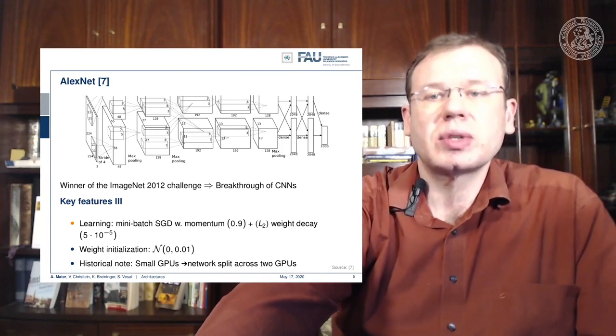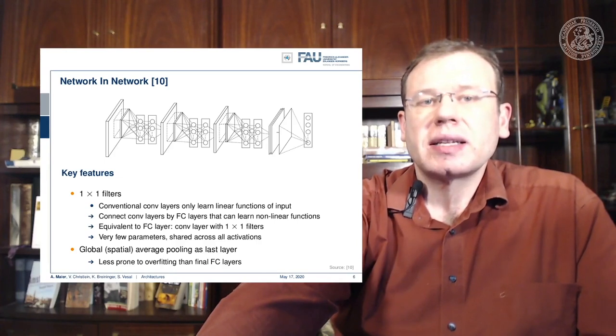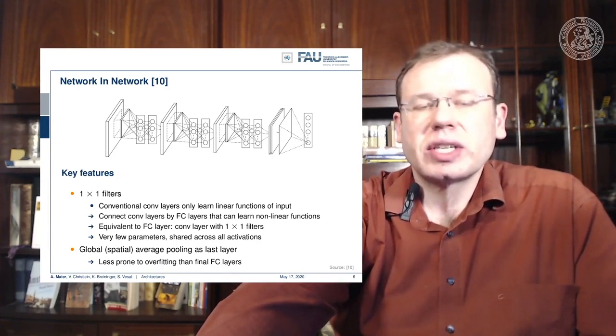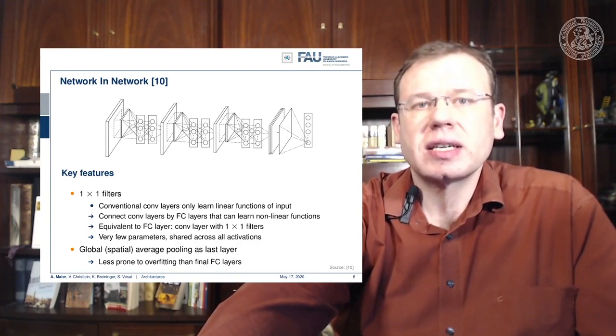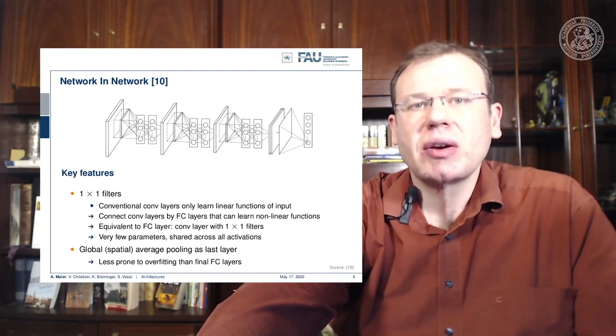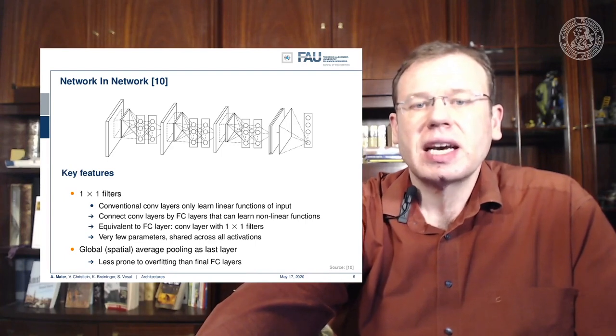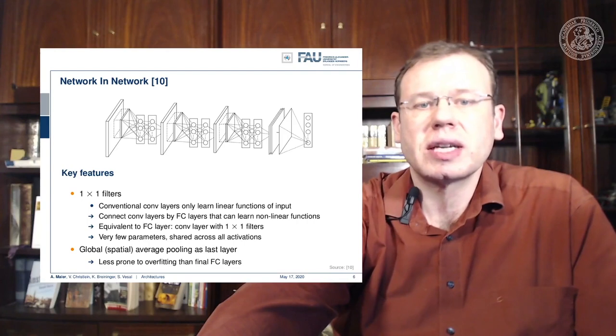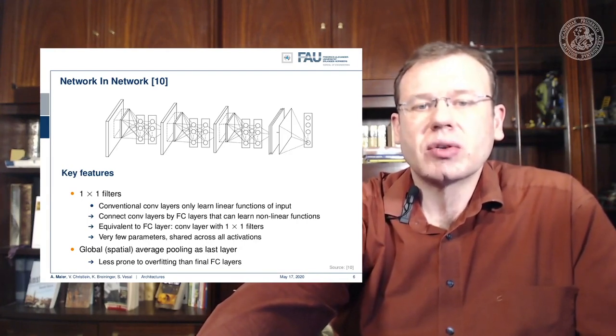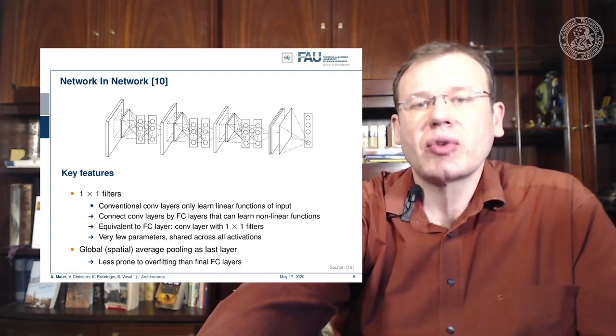Another key paper is the Network in Network paper, where they essentially introduce 1×1 filters. This was originally described as a network in network, but effectively we know it today as 1×1 convolutions. They essentially introduce fully connected layers over the channels, and we use this recipe now a lot if we want to compress channels. It has very few parameters shared across all the activations, and introduces global spatial average pooling as the last layer. This is essentially the birth of fully convolutional neural networks.